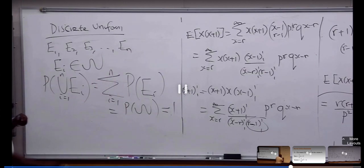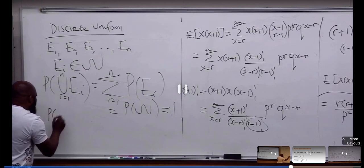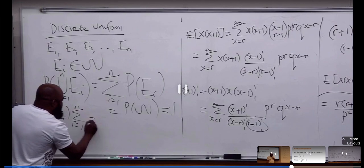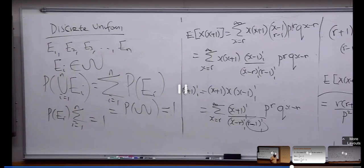So if I write the probability of E1 and I put this guy here, equal to 1. Then this guy, it's like I'm having a 1, sum of a constant. That's going to be n, right?